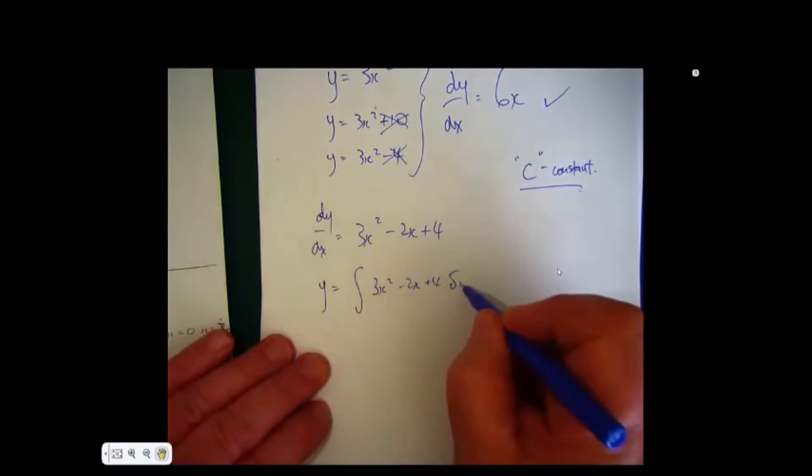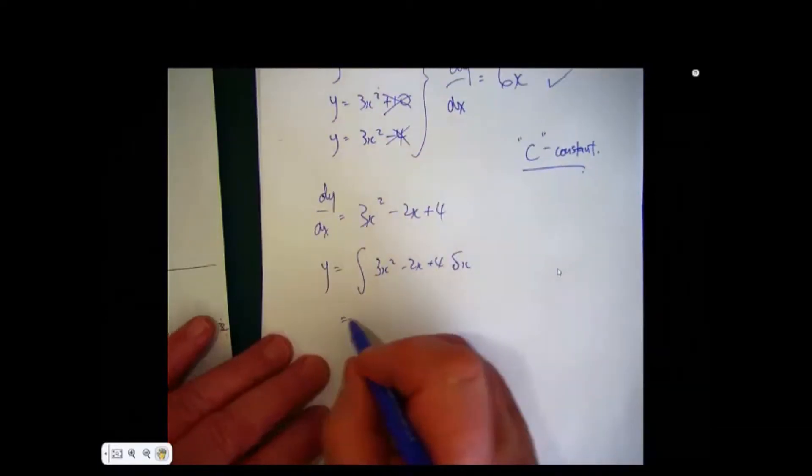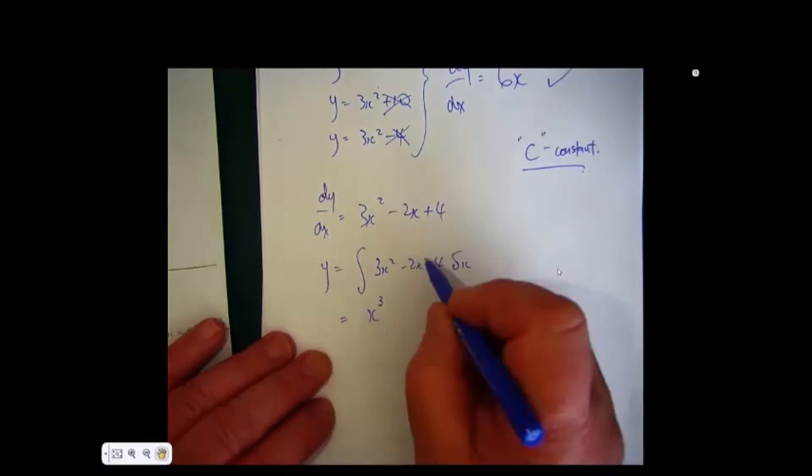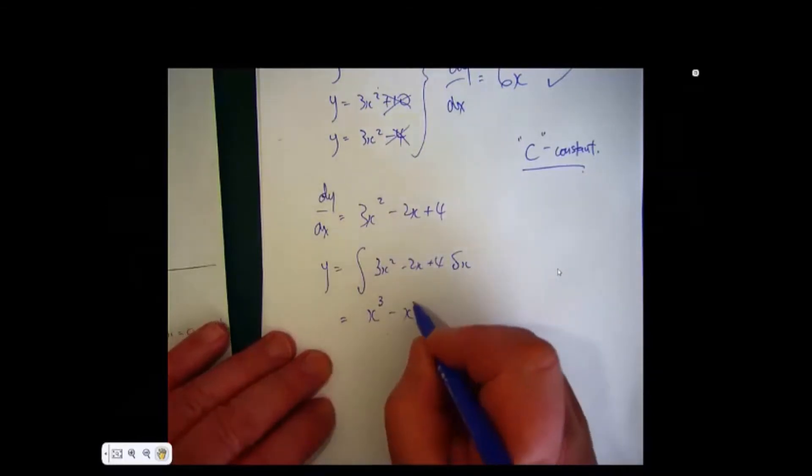Here we go. Raise the power by 1, 2 plus 1 is 3, divide by the power, so this will give us x cubed. Raise the power by 1, 1 plus 1 is 2, divide by the power, this will give us x squared.